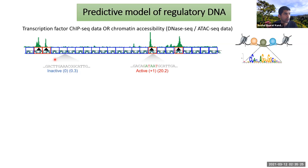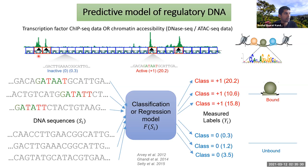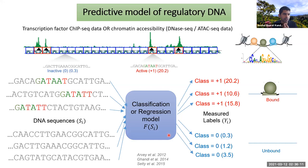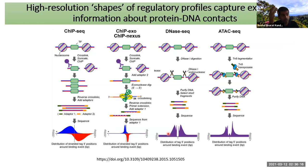The traditional approach bins the genome into ~1000 base pair chunks and associates each bin with a signal value, creating a classification or regression task with millions of sequences as inputs and binary or continuous labels as outputs. Various ML models — SVMs, neural networks, random forests — are then applied. The issue is this approach loses a lot of information.